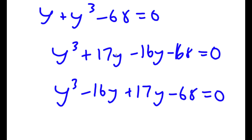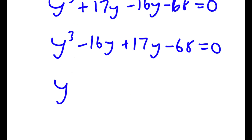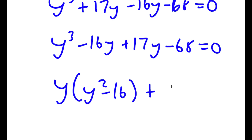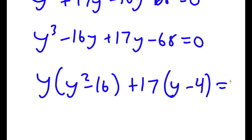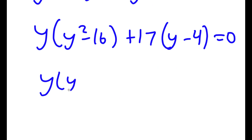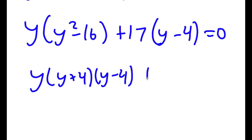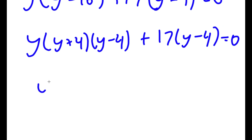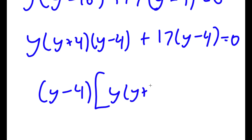So I get y cubed minus 16y plus 17y minus 68 equals zero — I simply switch the places of 17y and negative 16y. From y cubed minus 16y I factor out y to get y times (y squared minus 16), and from 17y minus 68 I factor out 17 to get 17 times (y minus 4). That equals y times (y plus 4)(y minus 4) plus 17(y minus 4) equals zero. Factoring out (y minus 4) gives (y minus 4) times (y(y plus 4) plus 17) equals zero.